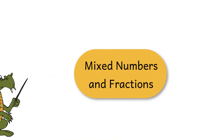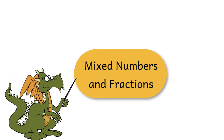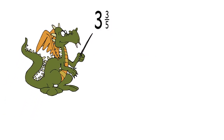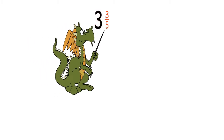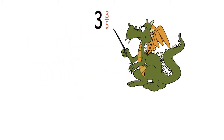Mixed numbers and fractions. Let's look at the number 3 and 3 fifths. We call this a mixed number. Simply put, a mixed number is a mixture of a whole number and a fraction. The 3 represents the whole number, and the 3 fifths is a fraction that tells us that we have a little more than the original 3.